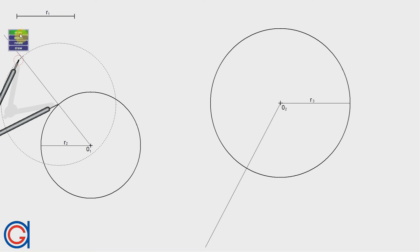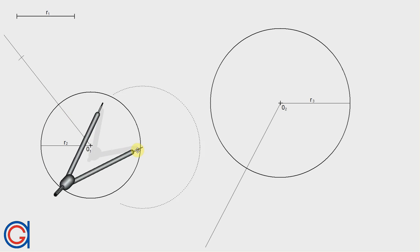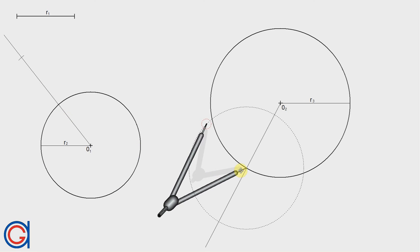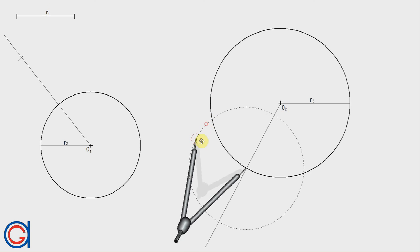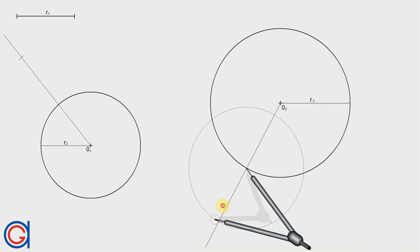Now we're going to do the same process with the second circle, transporting the given radius R1 onto the elongated line that we have just drawn, getting a new point which will be R1 plus R3.